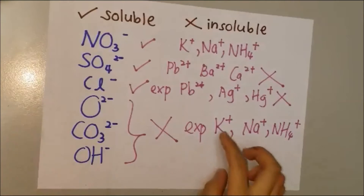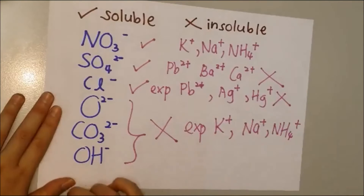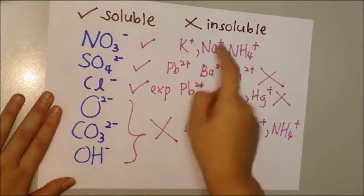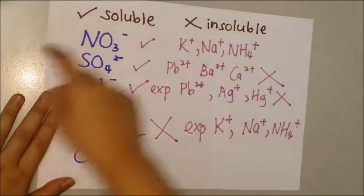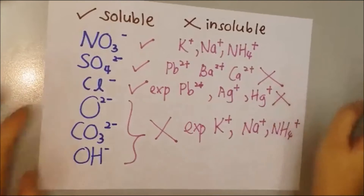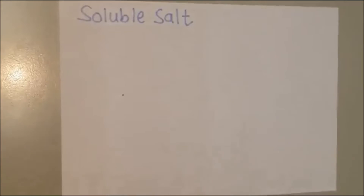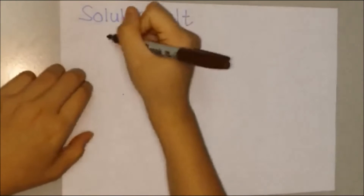Remember: nitrate, potassium, sodium, and ammonium are all soluble salts no matter which ion they react with. To prepare soluble salts, you can use four types of reaction. The first type is acid reacting with metal.